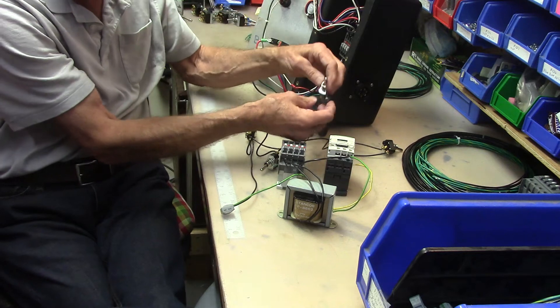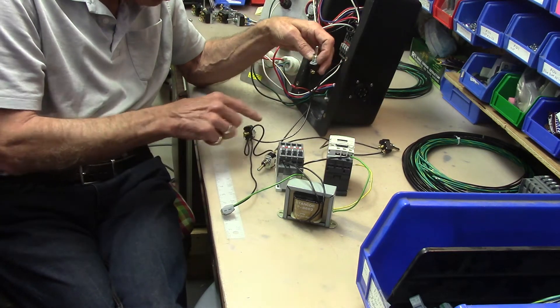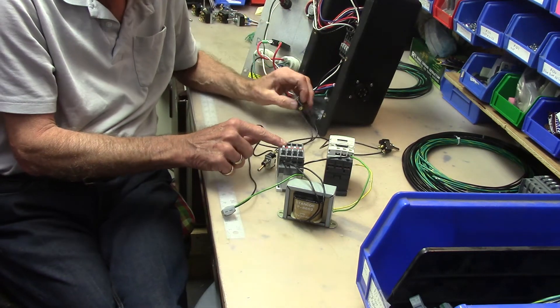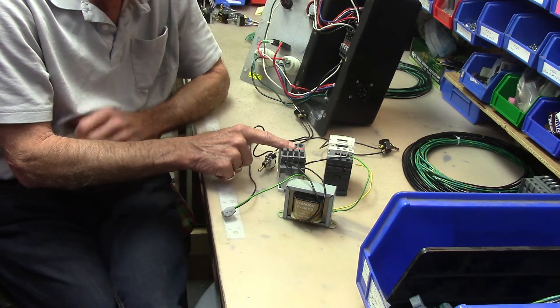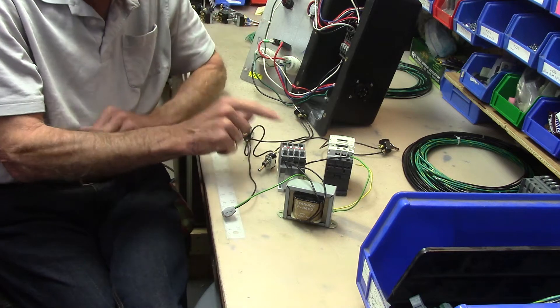So then when this switch is turned on, it then comes back in and goes to your blower contactor. When you put 24 volts right there and here, it pulls it in and sends power across.